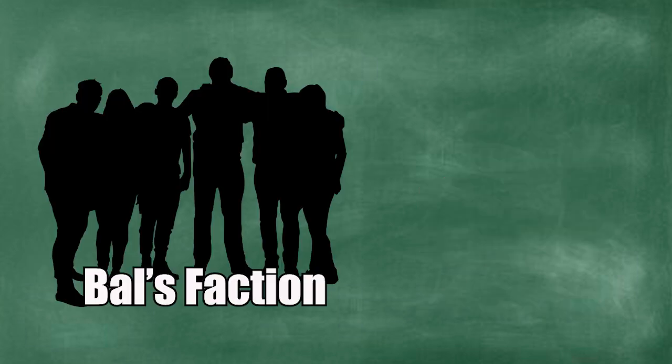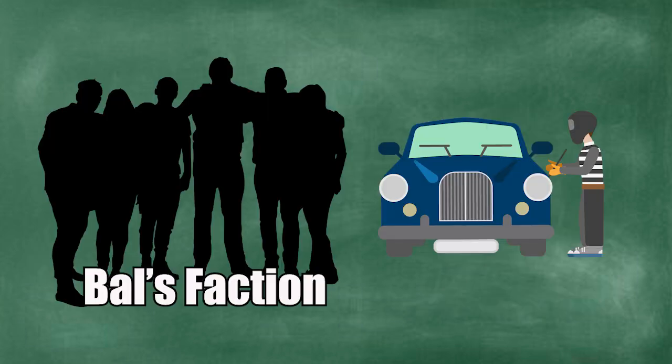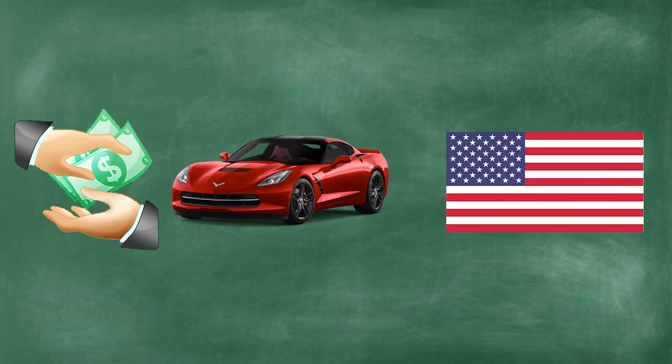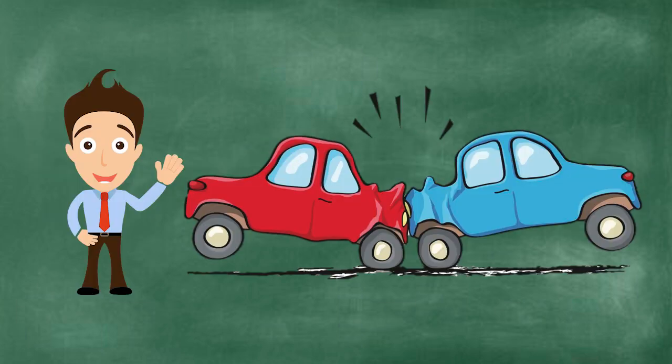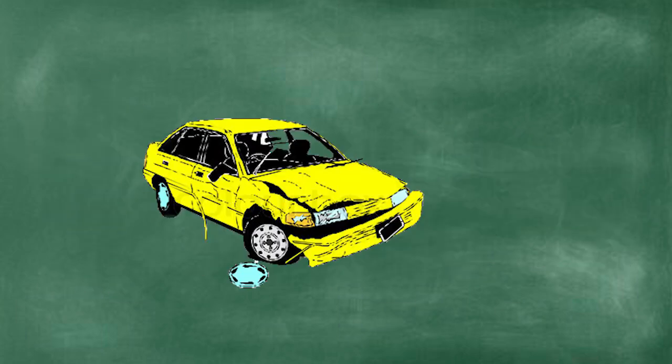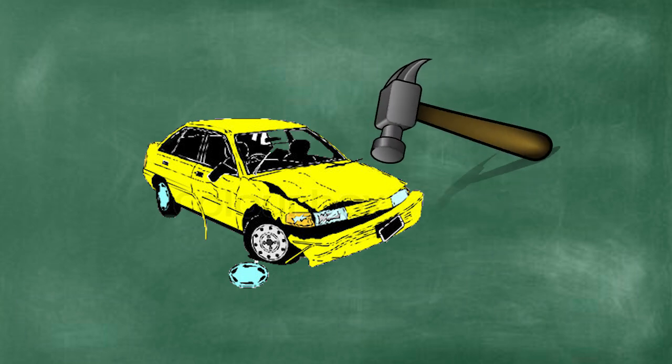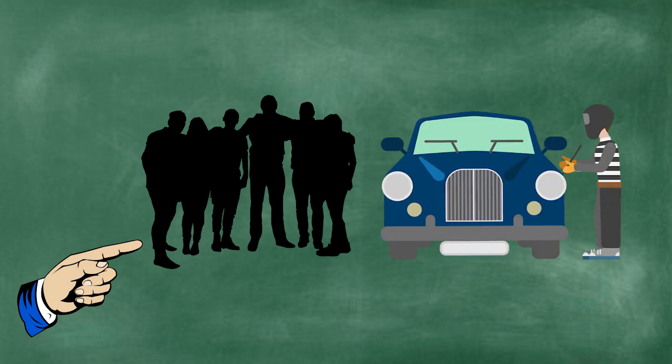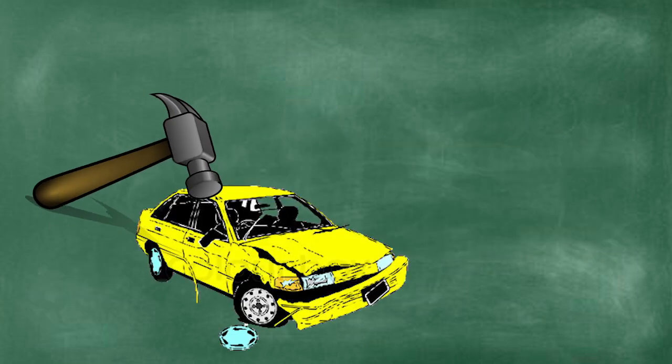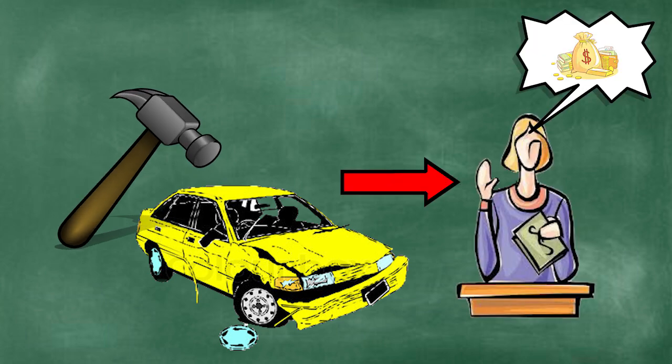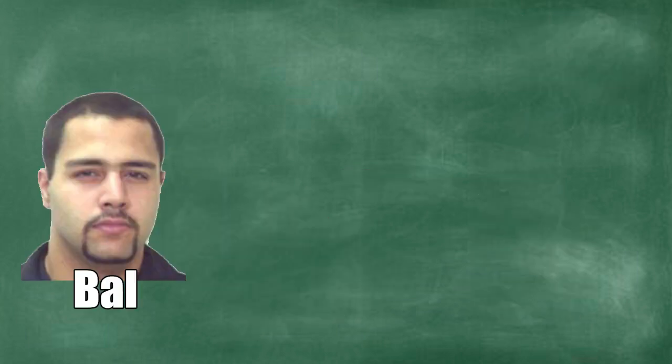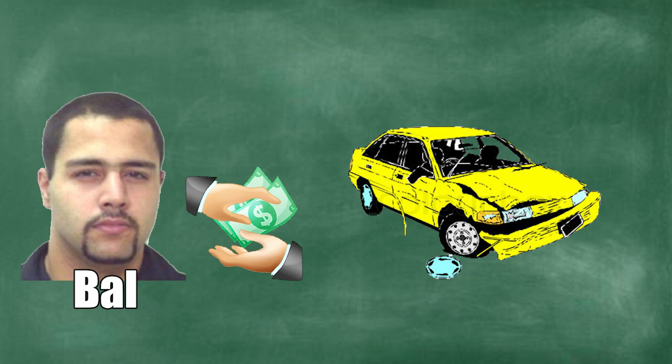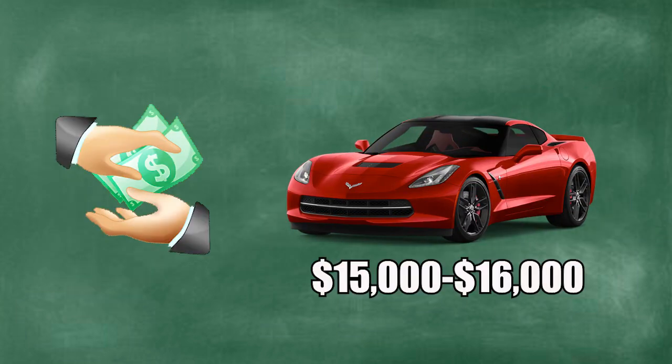It was also Bal's faction that dealt with luxury car theft. They would buy totaled luxury cars from the United States with the promise of crashing them. However, before destroying the vehicles, they would remove the ignition and vehicle registration number. He would then send out his men and have them steal a car of the same make and model. They would then change the ignition and registration number before flipping it at auctions. According to Bal, they would buy a totaled car at $2,000 and resell it for around $15,000 to $16,000.